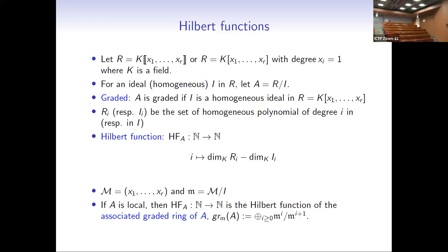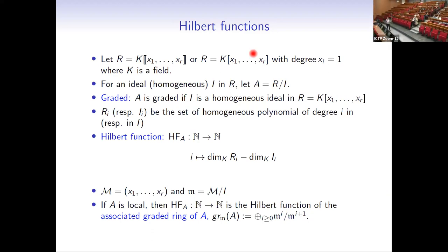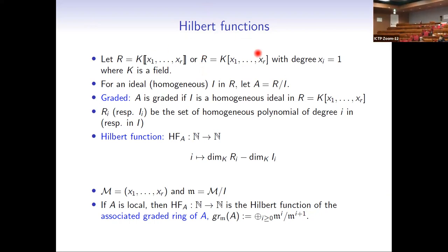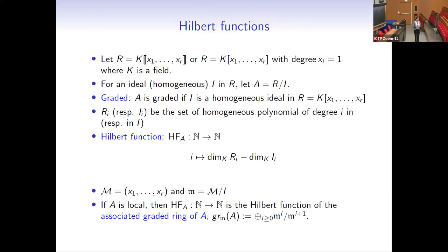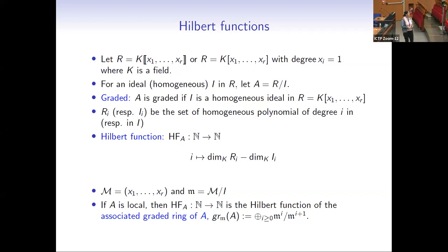In my setting, I'm assuming that my ring R is either a power series ring in r variables or a polynomial ring in r variables, where I assume that the ring is graded with the degree of x_i equal to one, and for me, always the R_0 part is a field. For an ideal I in R, we consider the ring A to be a quotient R mod I. In the case of a graded ring, I mean that my ideal I is homogeneous in the polynomial ring.